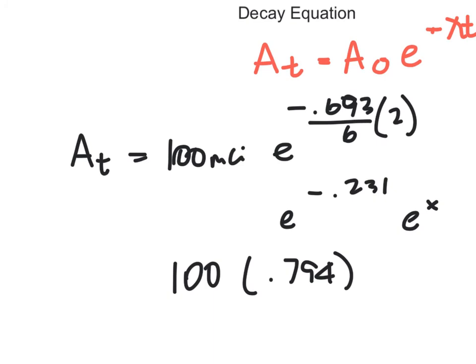And so the answer would be the amount of activity at 2 hours is equal to 79.4 millicuries.